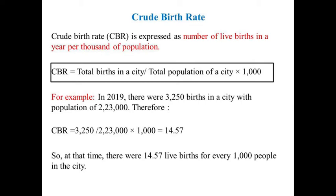One important element of population change is the crude birth rate (CBR). It is expressed as the number of live births in a year per thousand of population. The formula is: total births in a city divided by total population of that city, multiplied by 1000. For example, in 2019 there were 3,250 births in a city with a population of 223,000, giving a CBR of 14.57 live births per 1,000 people.